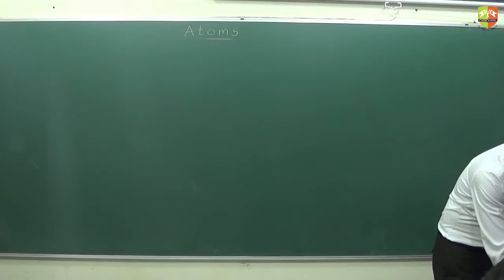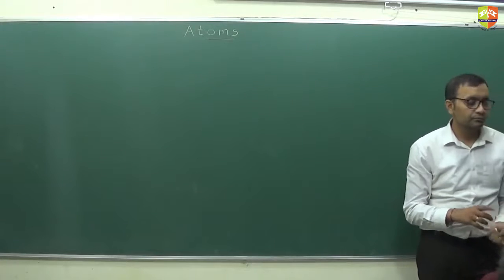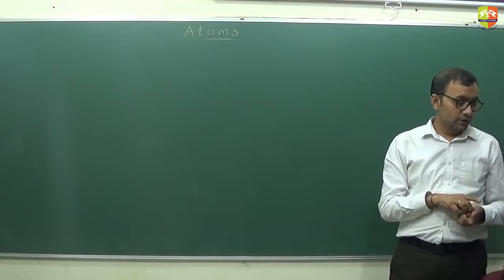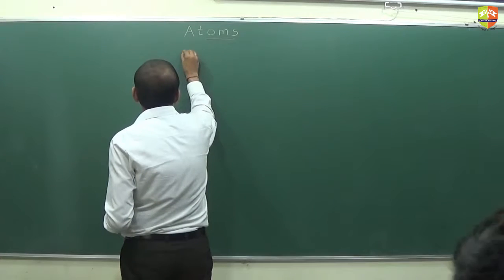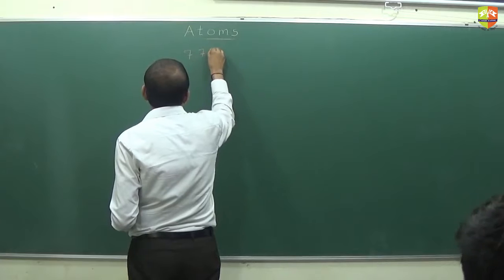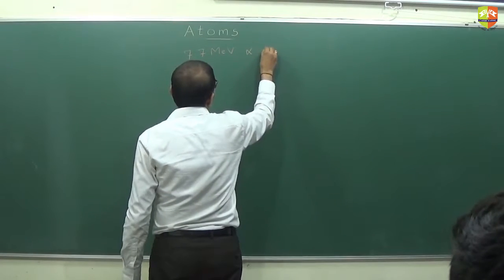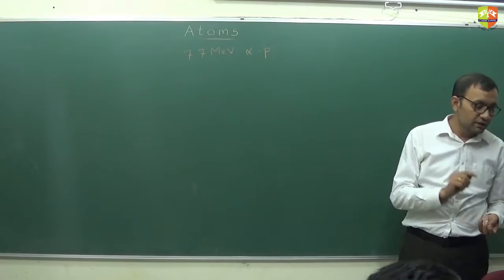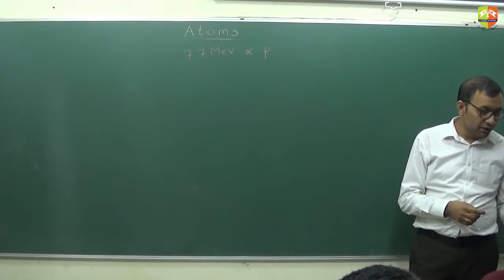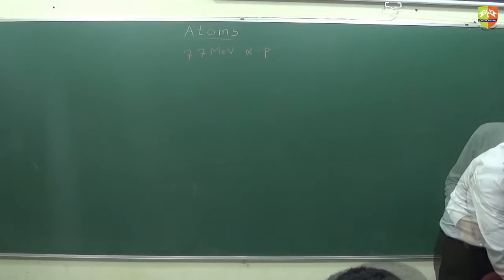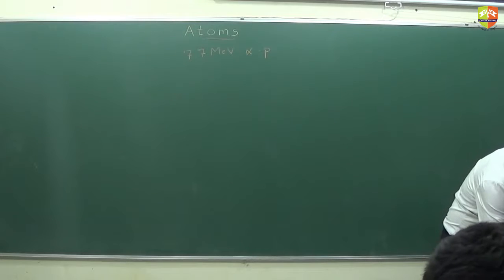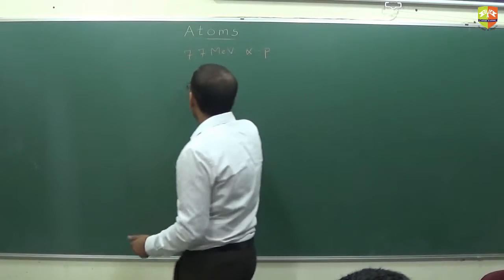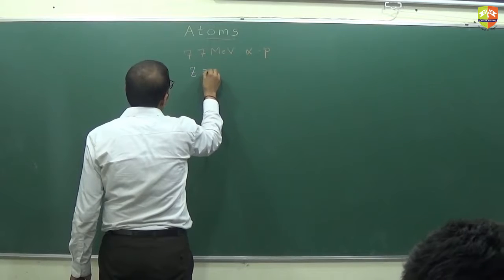Let's solve a numerical. In this experiment, what is the distance of closest approach to the nucleus for a 7.7 MeV alpha particle before it momentarily comes to rest and reverses its direction? The atomic number of gold is given as 79.